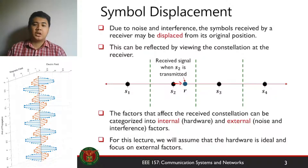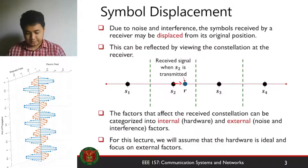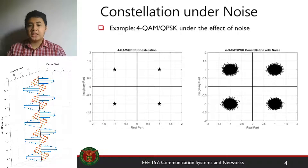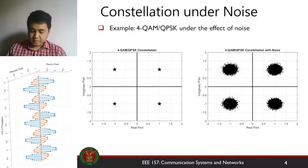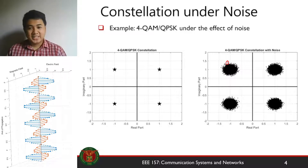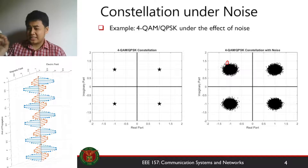For this lecture, we'll only assume that the hardware is ideal and focus on external factors, specifically additive white Gaussian noise. What happens when your constellation is under noise? Your transmitted constellation, ideally, looks like a clean 4QAM or QPSK constellation, but when you transmit it under noise, the received constellation shows multiple symbols displaced from their original positions. Each dot represents one received symbol, and there are 100,000 dots in this figure. As you can see, there is still some visible division between the constellation points.